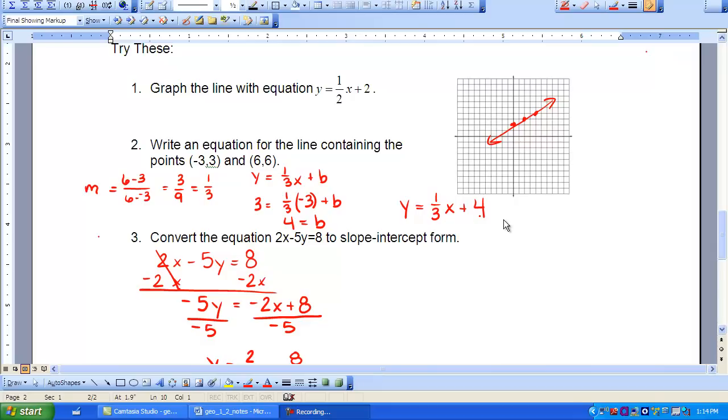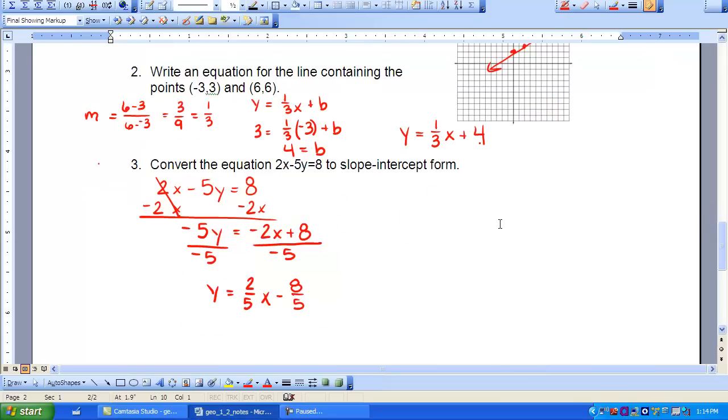The last thing you were to try was to convert the equation 2X minus 5Y equals 8 into slope-intercept form. So I move the 2X over to the other side by subtracting 2X on both sides. That left me with a negative 5Y equaling a negative 2X plus 8.